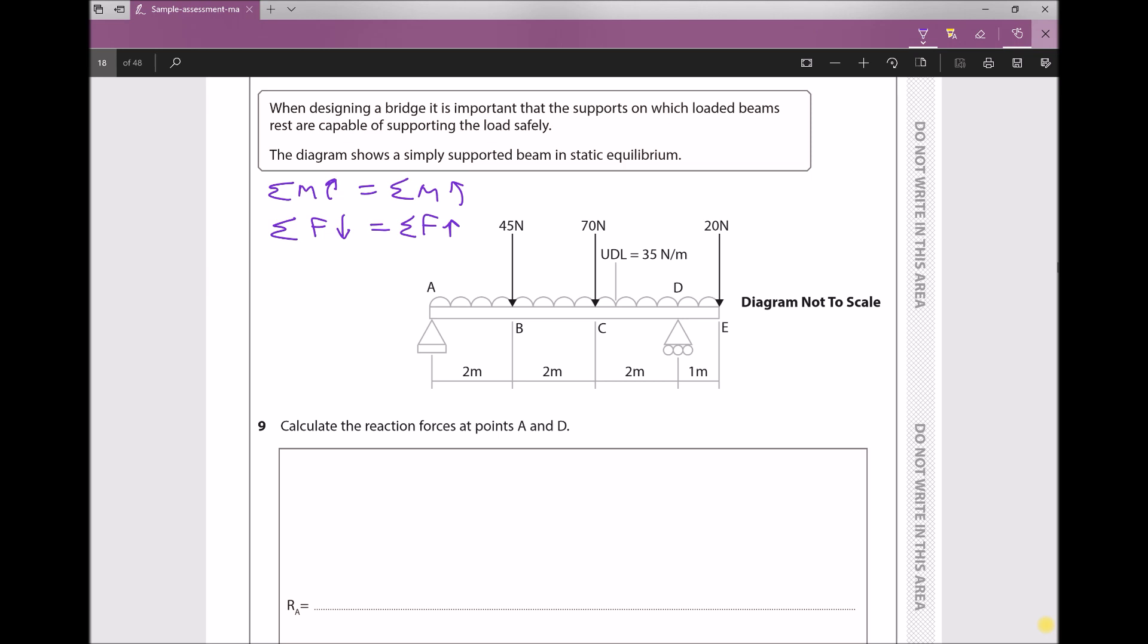Now what we're going to do is we're going to take moments about point A to determine the force at point D or the right-hand support, and once we've got that force we're then going to use the second condition for static equilibrium, so the sum of the forces down equals the sum of the forces up, in order to find our reaction at the left-hand support.